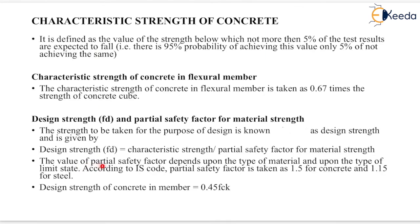The value of the partial safety factor depends upon the type of material and the type of limit state. According to the Indian standard code, the partial safety factor is taken as 1.5 for concrete and 1.15 for steel. Therefore, the design strength of concrete in a member equals 0.45 fck.